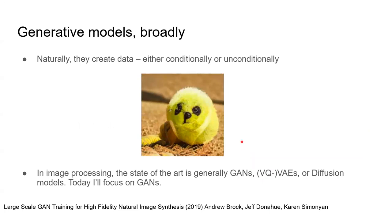So what are generative models? As you'd expect, they create things — specifically data — and they can do that either conditionally or unconditionally. When a generative model is conditioned on something, that's basically saying instead of it being fully unsupervised and just taking in images and producing new images, we're including some kind of labeling for the images. There's a GAN called BigGAN that has an unconditional version and a conditional version. The conditional version takes in noise — a random vector of noise — a label, and then produces an image. Unconditionally, we just don't use the label.